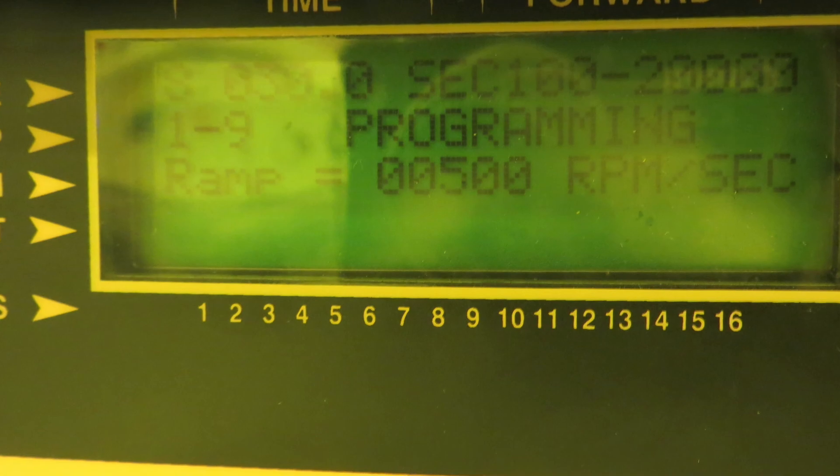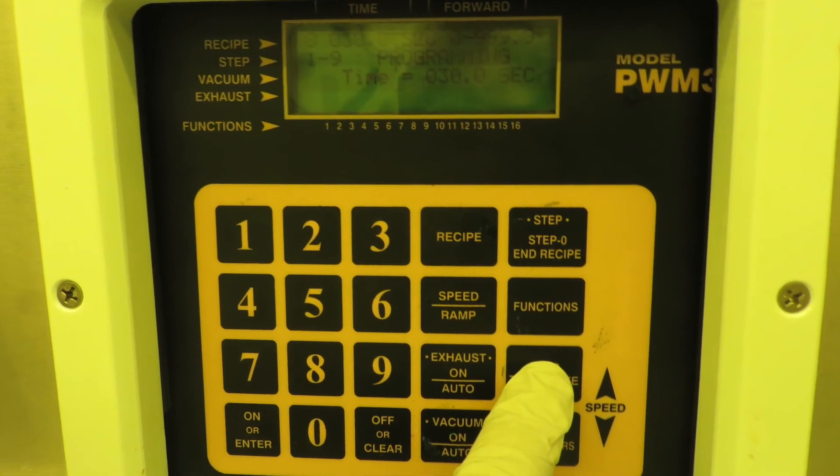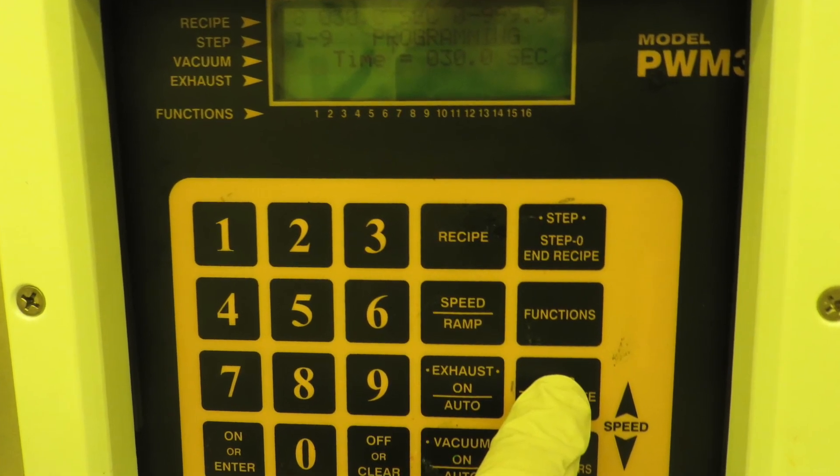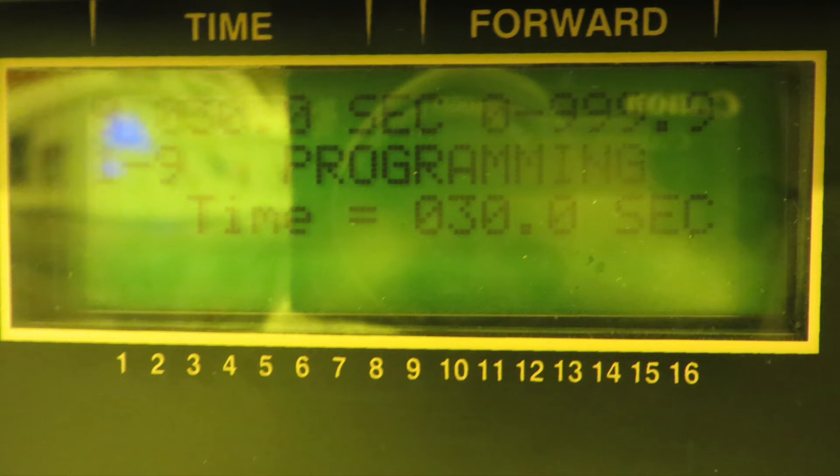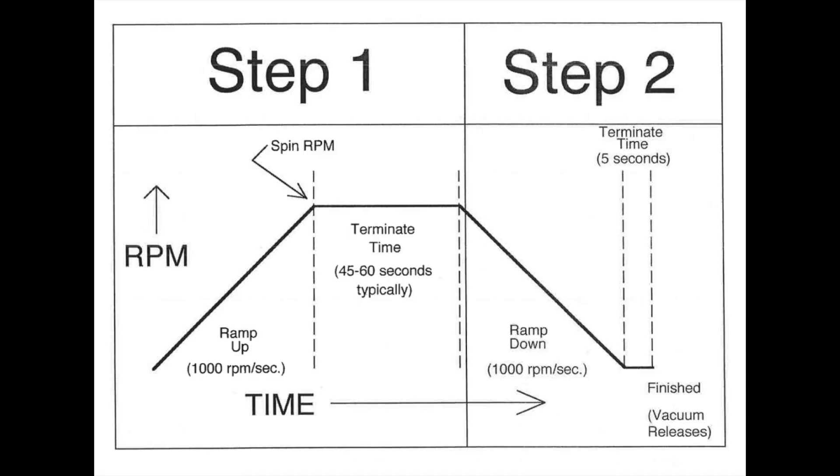So in a normal two-step process, the second step will just be getting it back down to zero. So you would enter zero as the speed for the second step, and then whatever ramp you want to come back down. And then the terminate time would be the time that's left over after it gets to zero. So if you want to keep the sample on the chuck for maybe one more second after it stops spinning, you would put maybe one second for the terminate time of the second step.